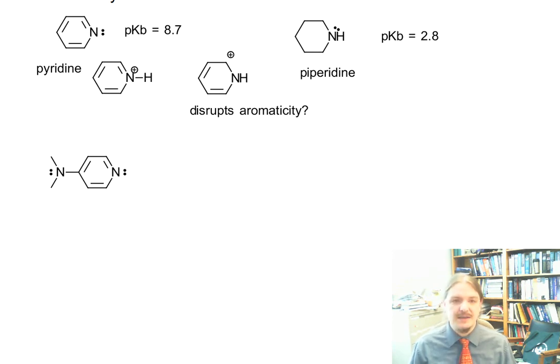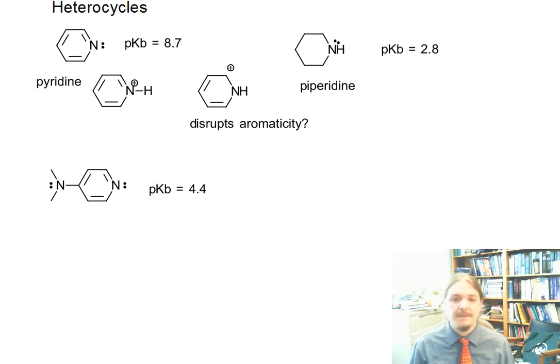DMAP has a pKB of 4.4, which makes it sort of equivalently basic to ammonia, and more basic than pyridine.